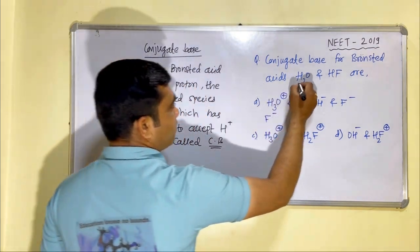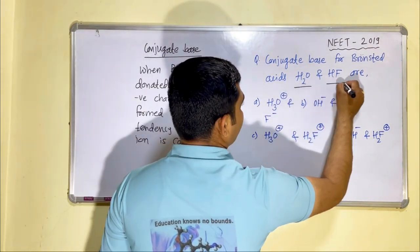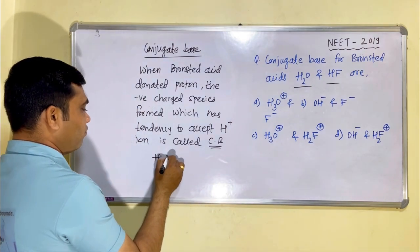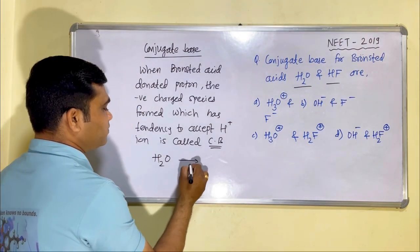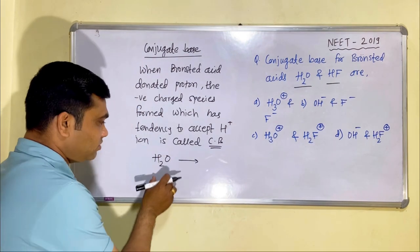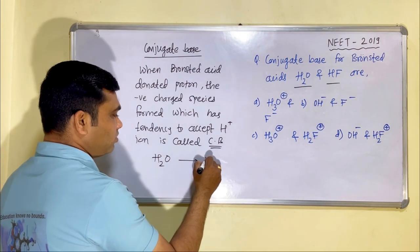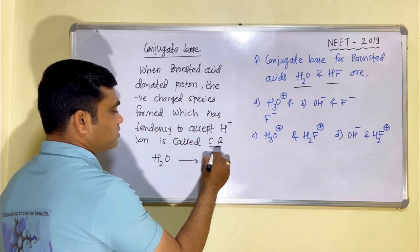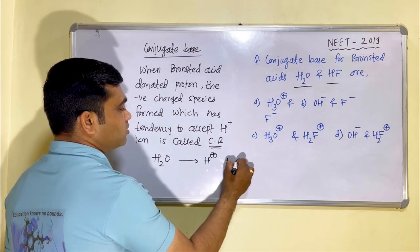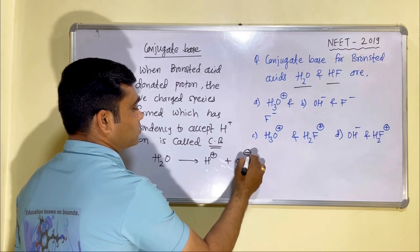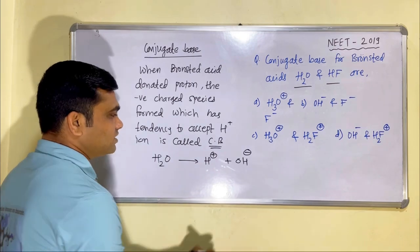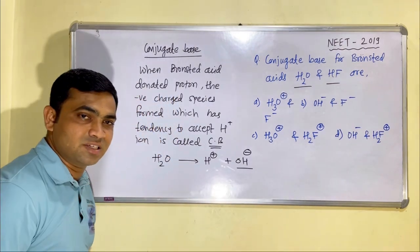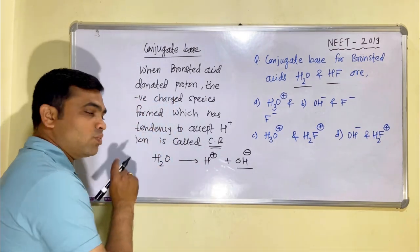First we have H2O and then HF. When H2O donates an H+ ion — a proton — it becomes H+ plus OH⁻. The negatively charged species OH⁻ is the conjugate base of water.